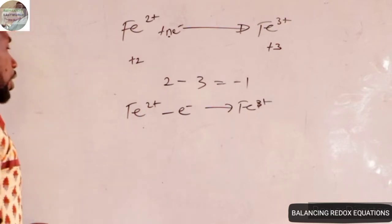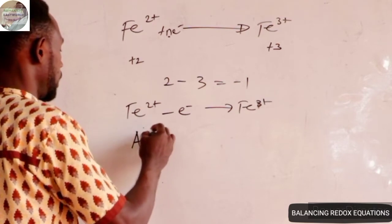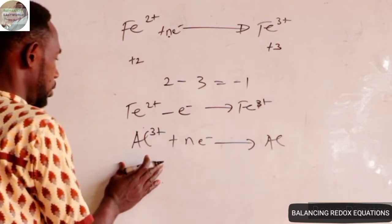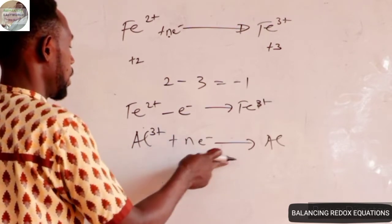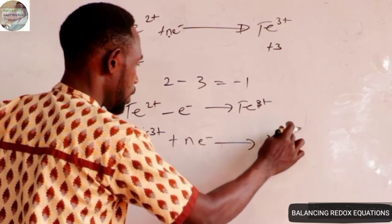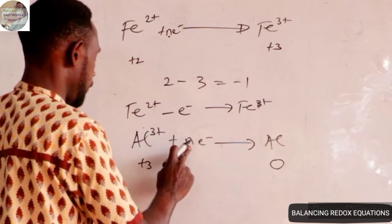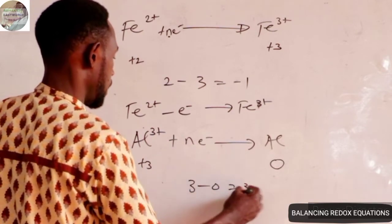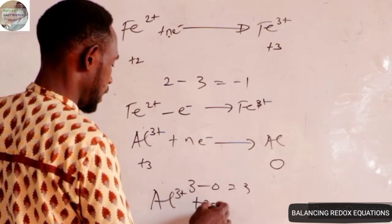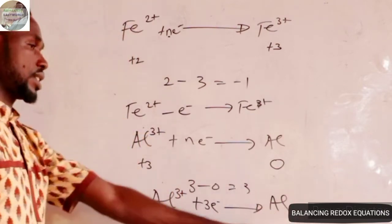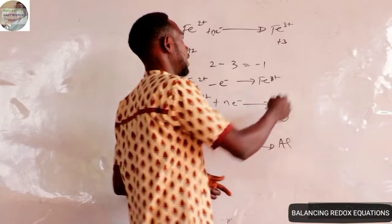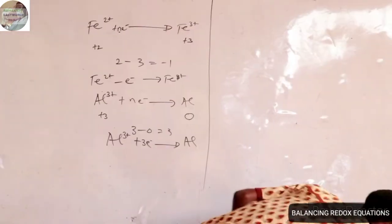In another form: if in an ionic equation you see Al³⁺ + ne⁻ → Al — this is the aluminium ion becoming aluminium metal — how many electrons will you gain? To find n: the charge on the reactant side is +3 × 1 = +3; on the product side, aluminium metal has no charge, so 0 × 1 = 0. Therefore n = 3 − 0 = +3. Aluminium ion gains three electrons to be reduced to aluminium metal. This is very relevant in electrolysis.